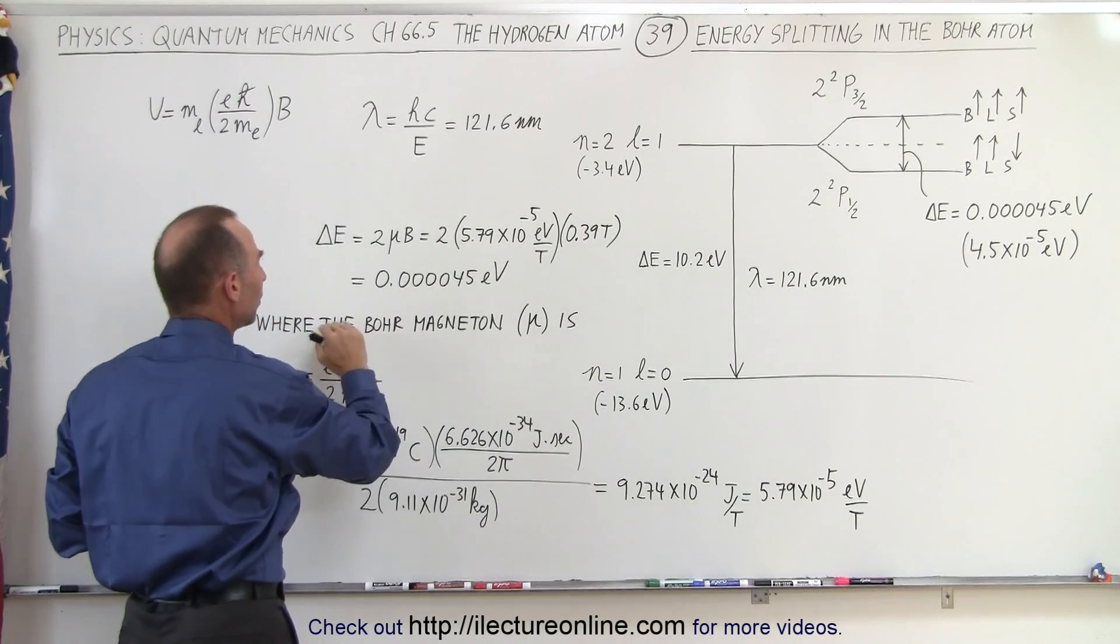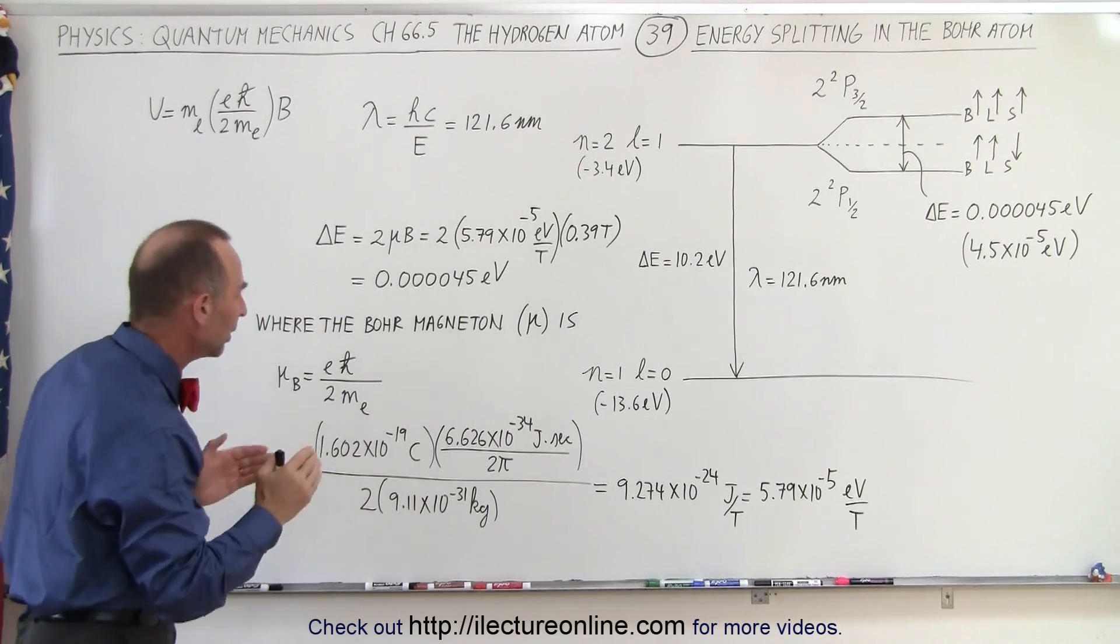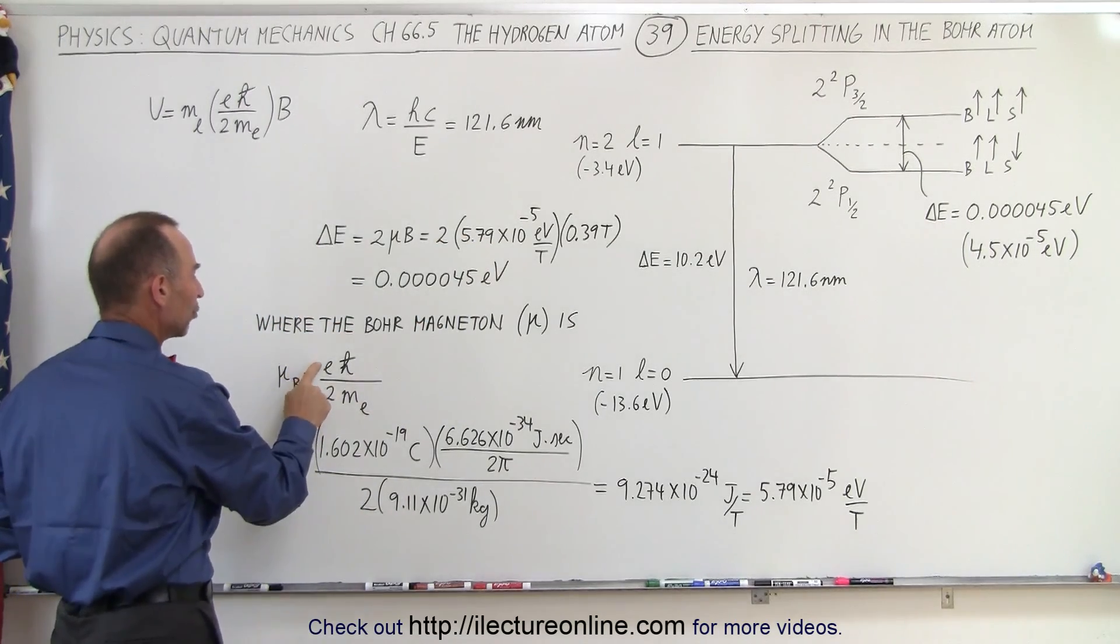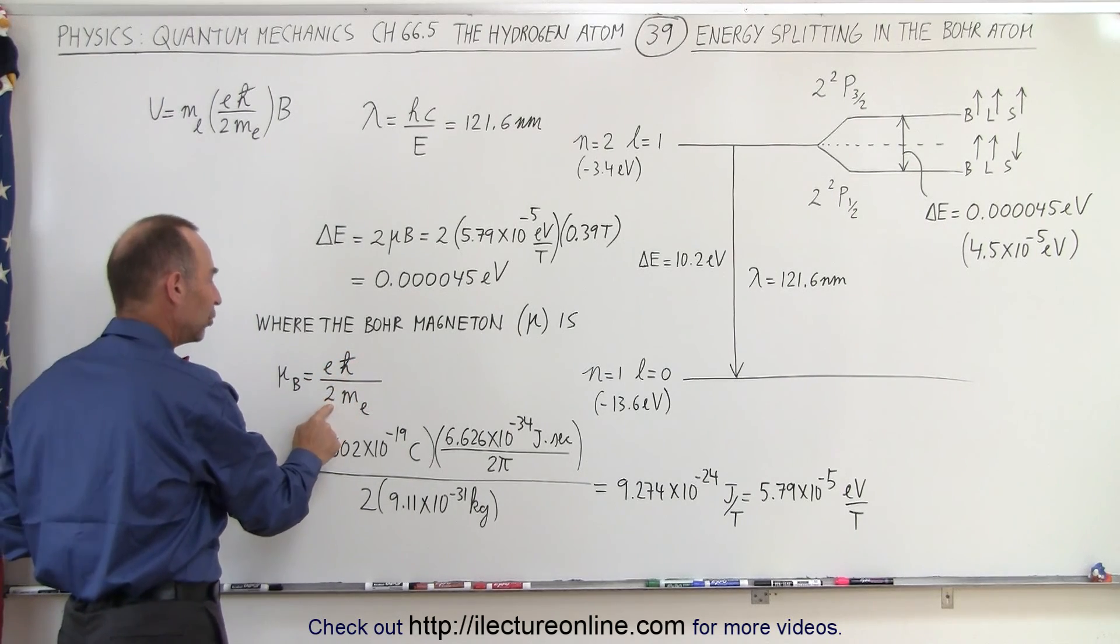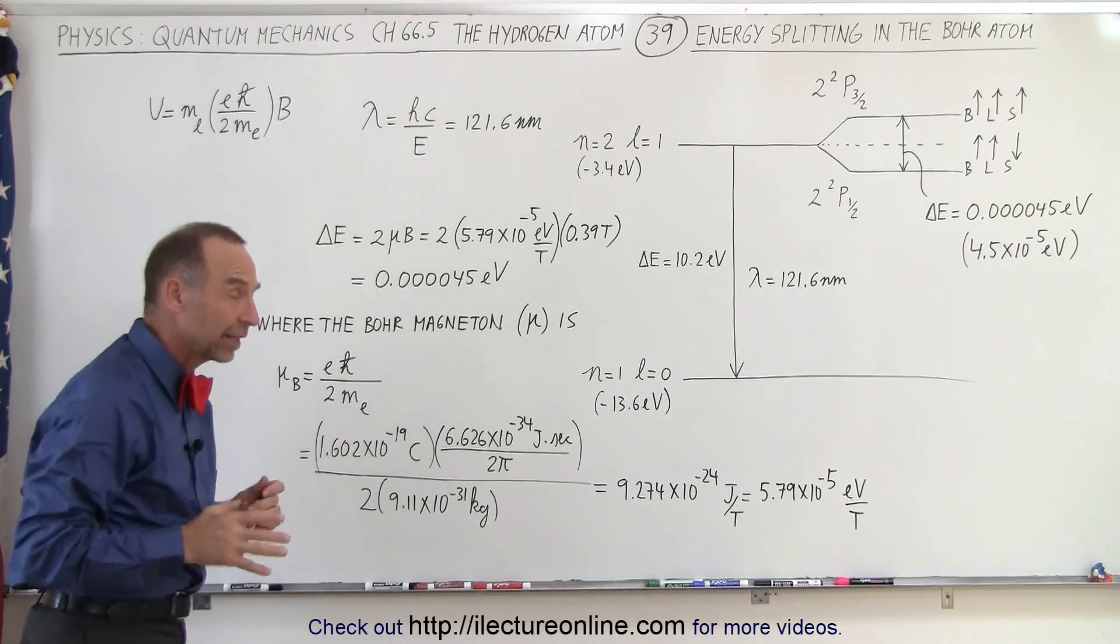Mu here represents what we call the Bohr magneton. It's the quantity that's defined by the charge on the electron times Planck's constant divided by 2 pi, divided by 2, and divided by the mass of the electron.